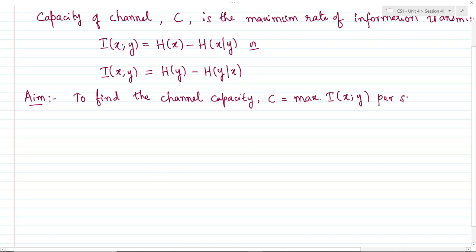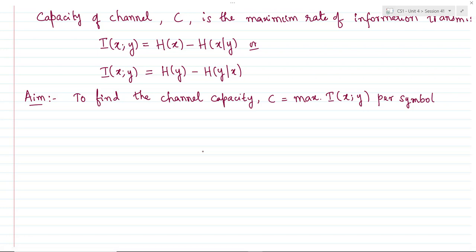The channel capacity is defined per second. But let us first find the maximum value of I(X;Y) per symbol. If there are k symbols per second, we can multiply accordingly. So we shall find the capacity of a channel given certain specifications.